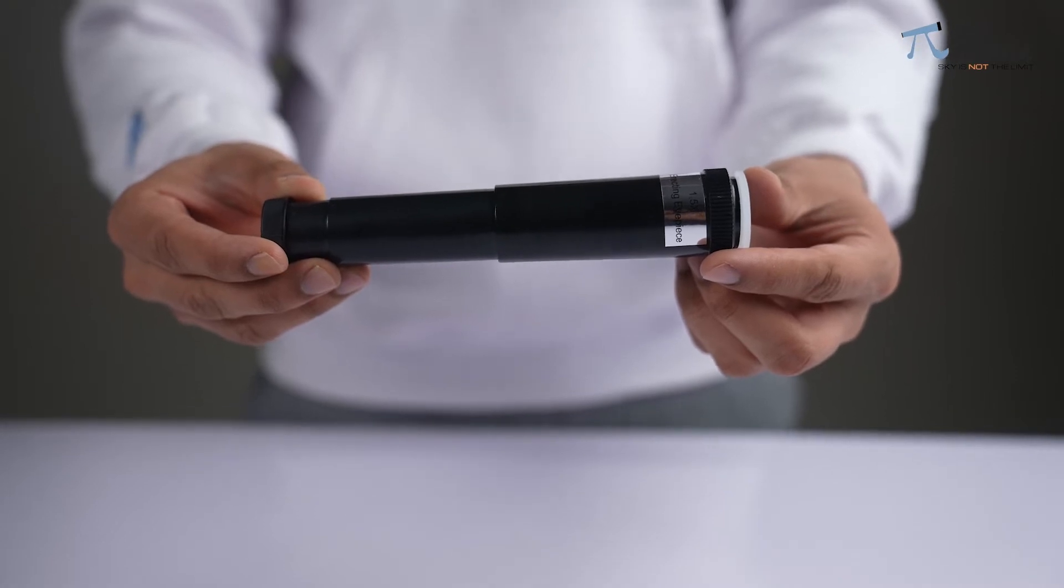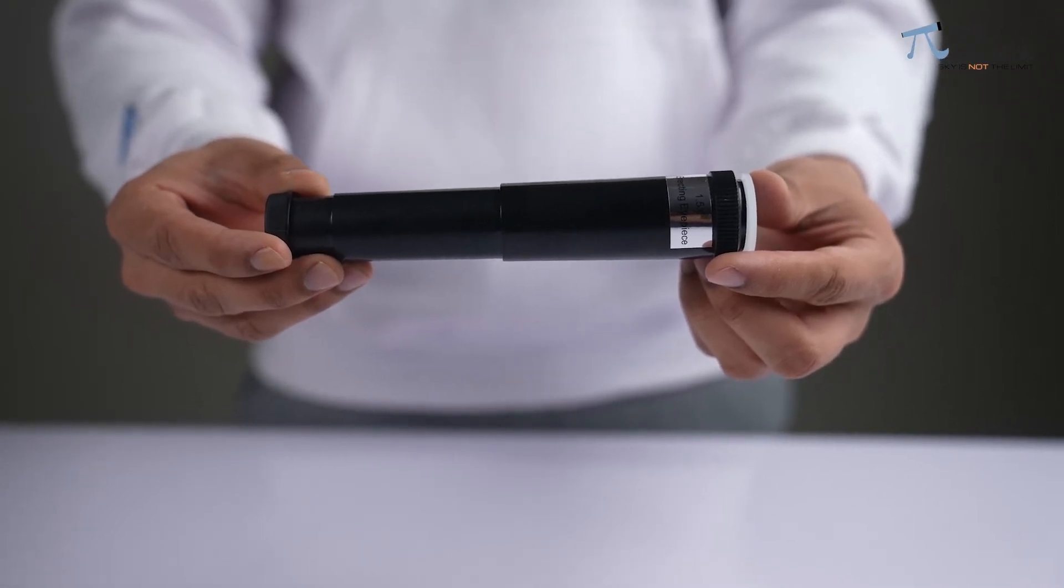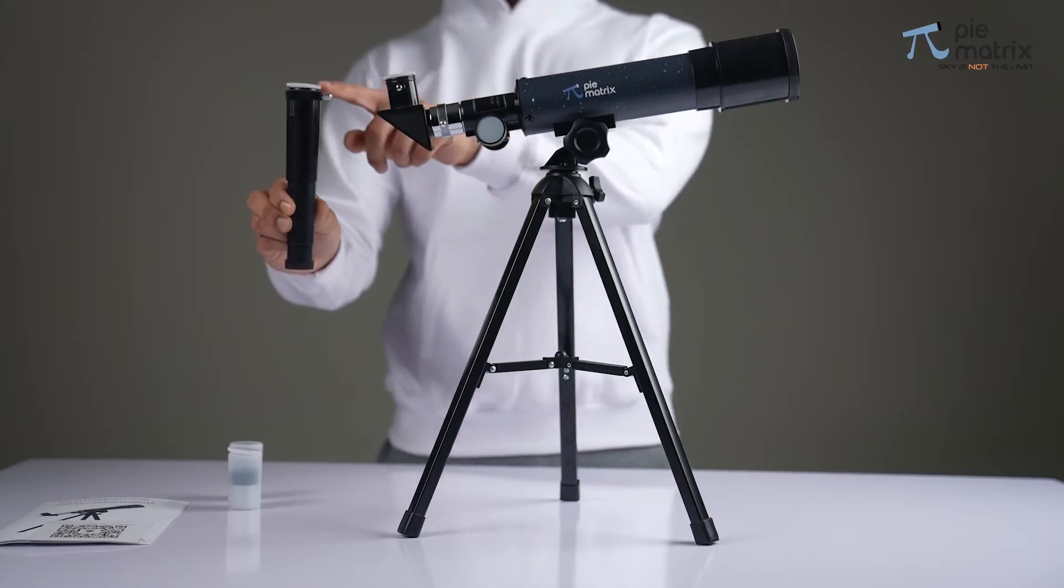Now, insert the erecting eyepiece which displays the image in the correct orientation into this barrel.